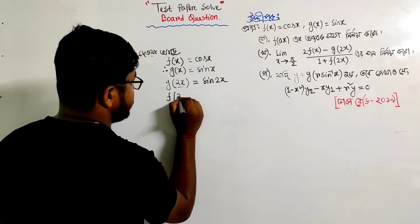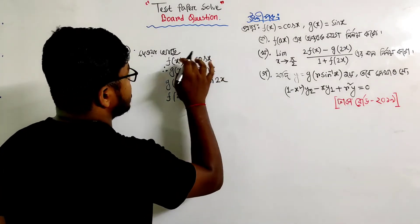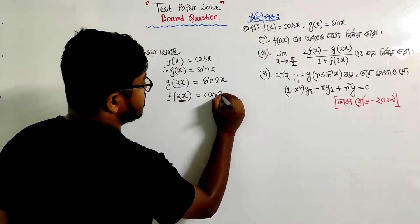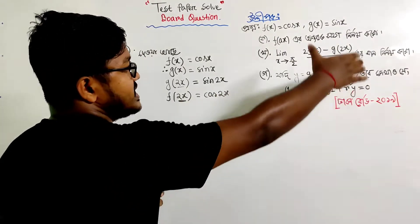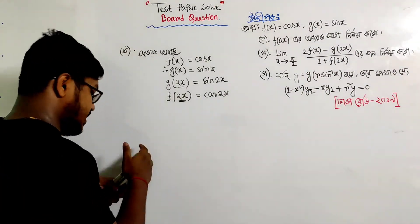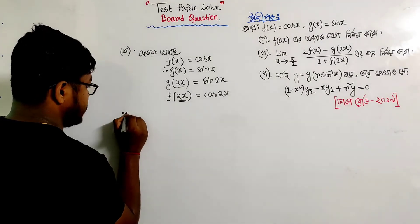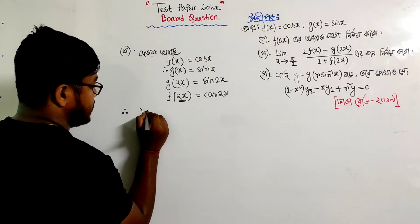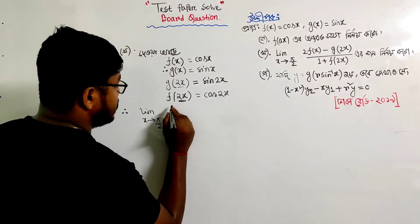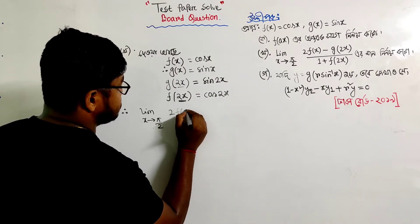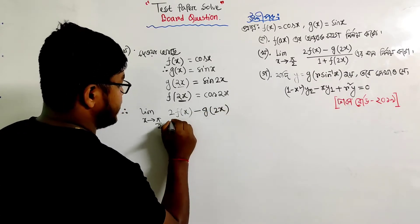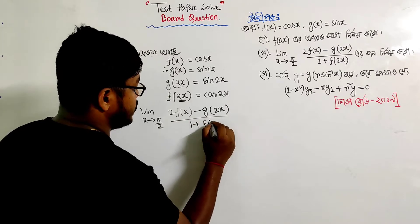Sin x will give 2x. f(2x) involves cosine. So the limit as x tends to pi by 2 of 2f(x) minus g(2x) divided by 1 plus f(2x).